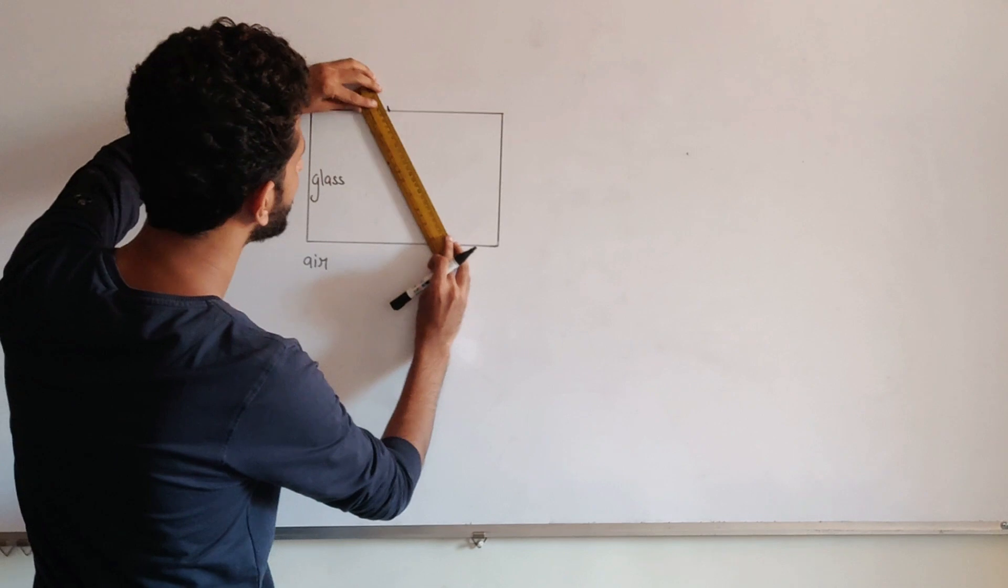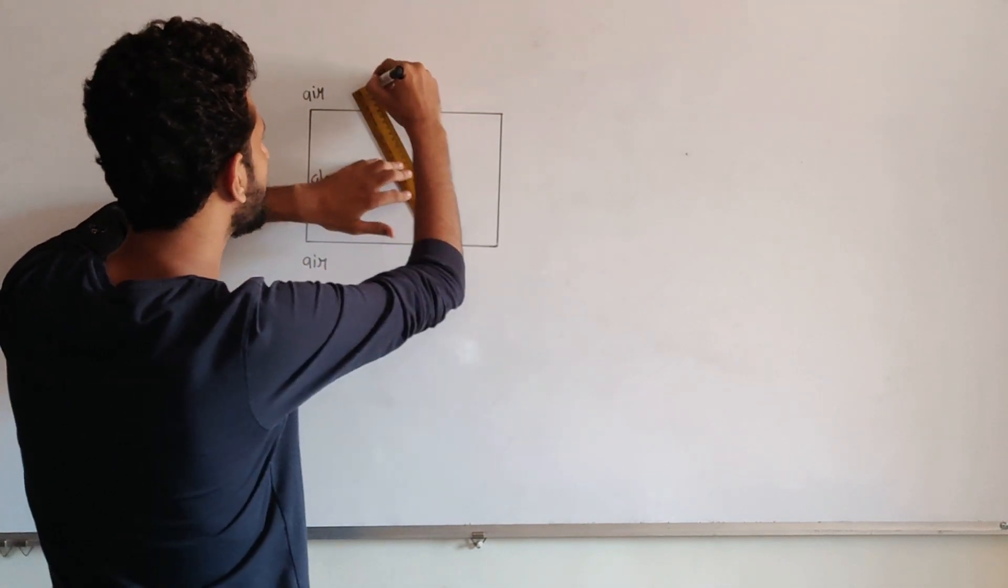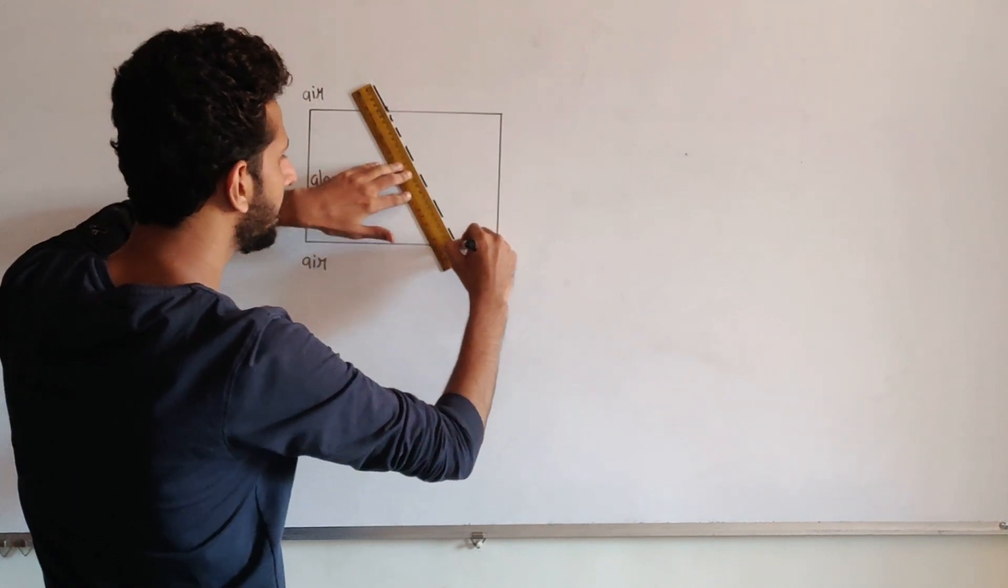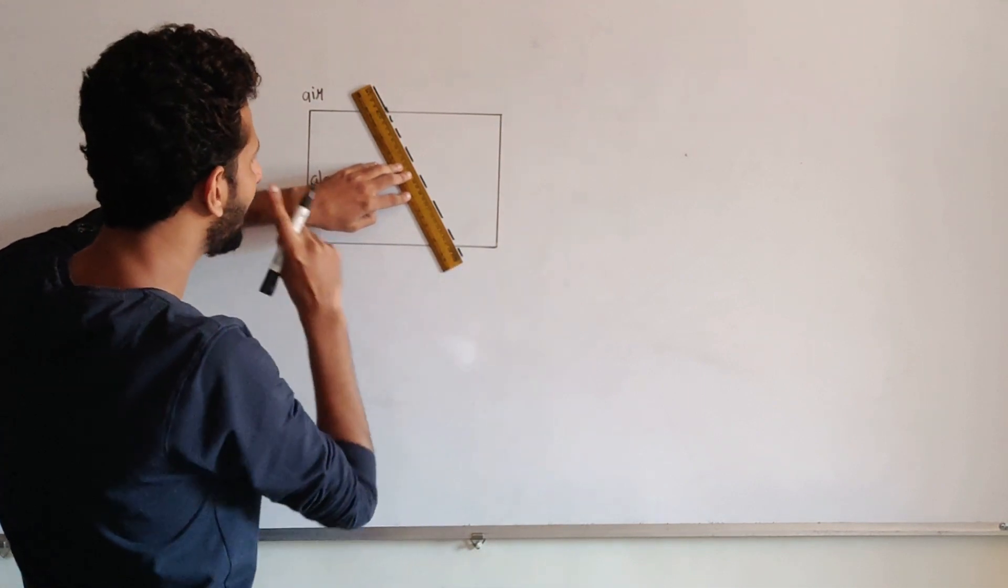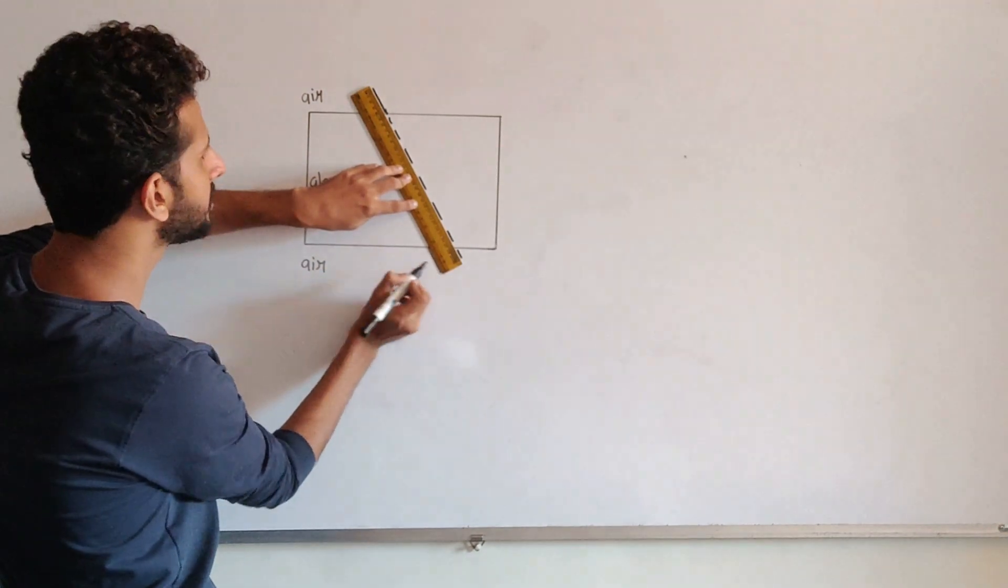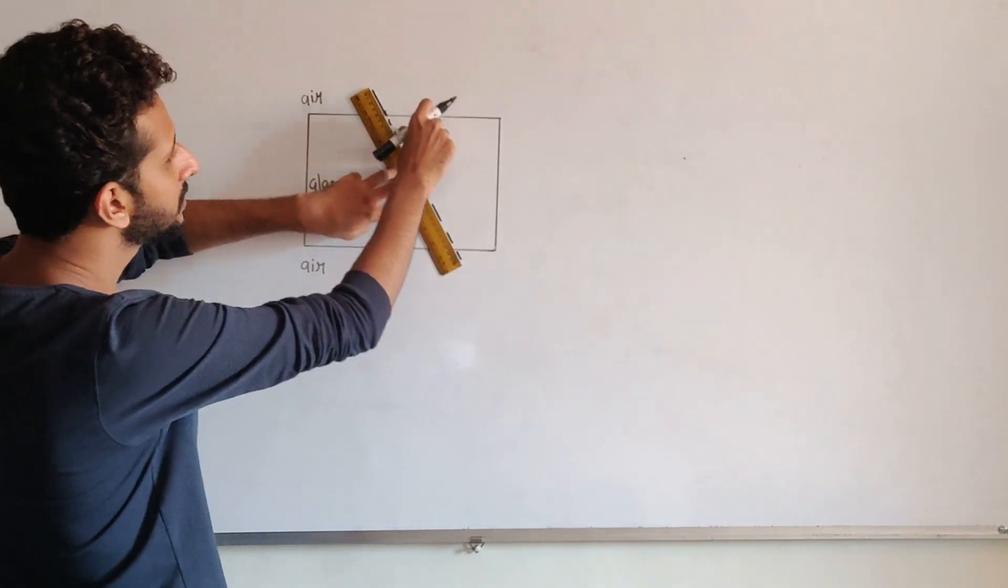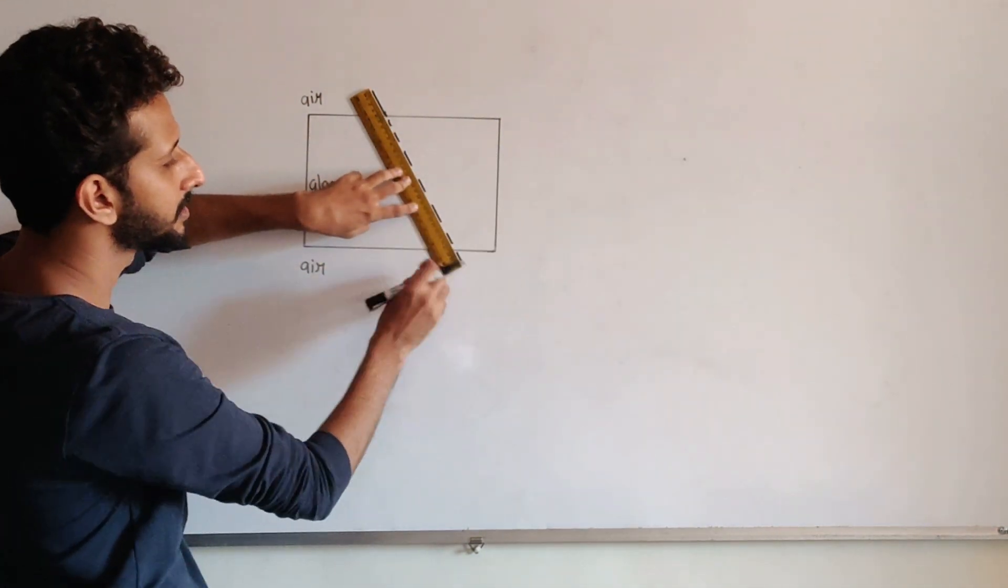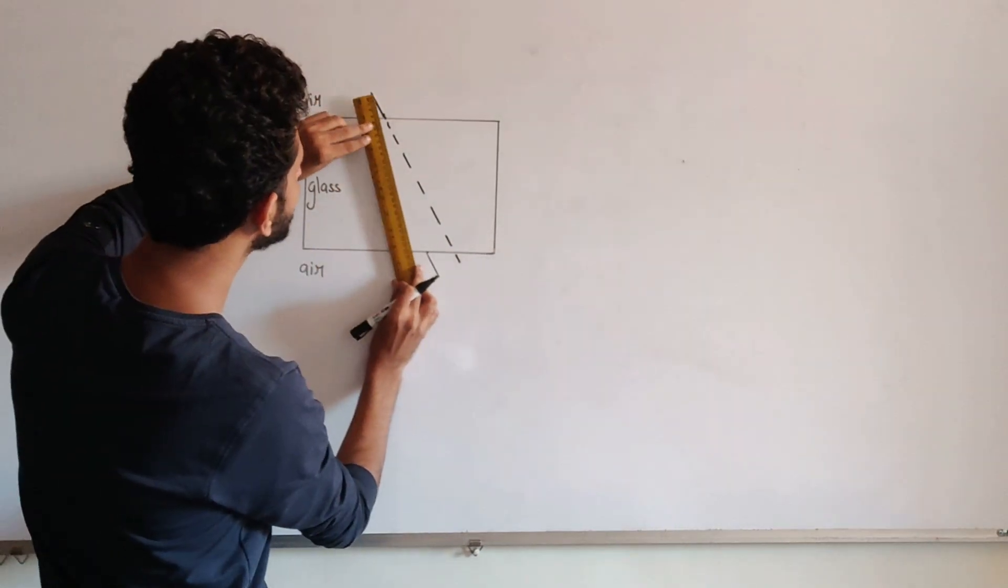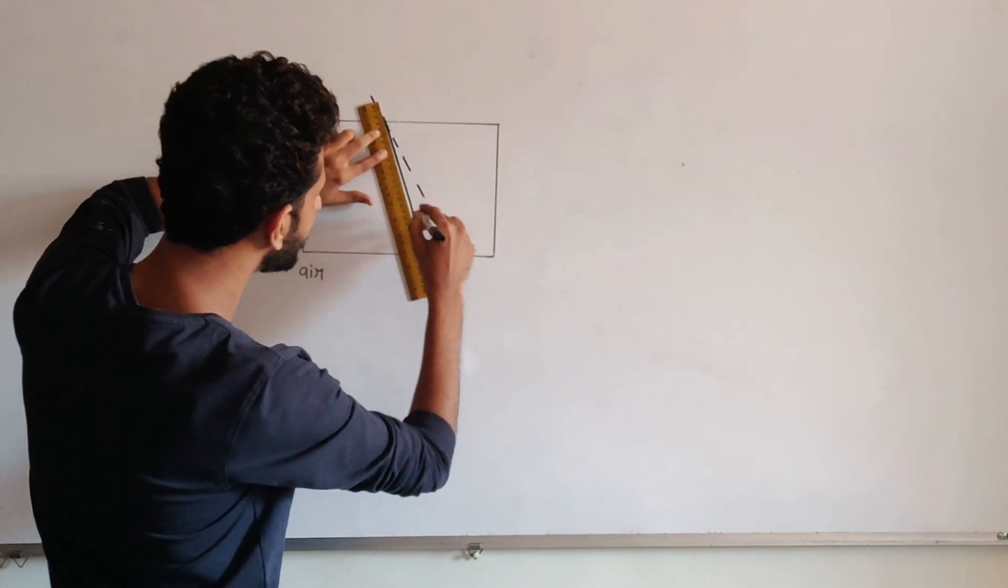Now once that is done, what you have to just do is mark the incident ray and extend it in a dotted line inside the glass slab and outside the glass slab and on the other side at the lower bottom of the glass slab take your emergent ray. So your incident ray is done, your emergent ray is done and the original direction of travelling of the incident ray is done. Now you can remove the scale and just take these two points and join them.